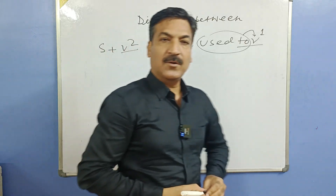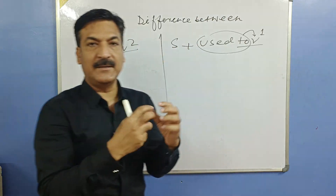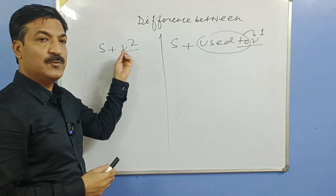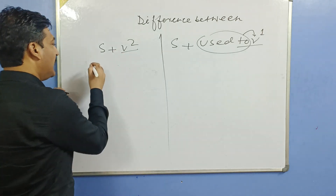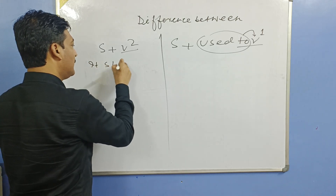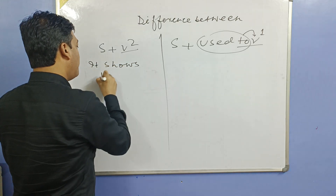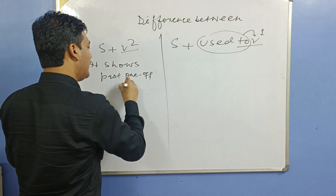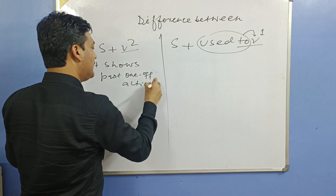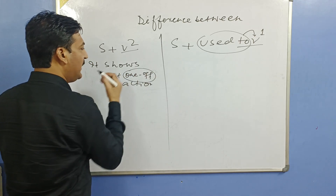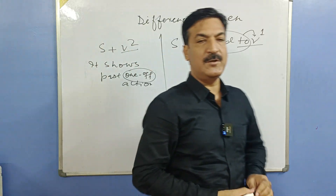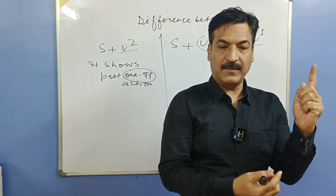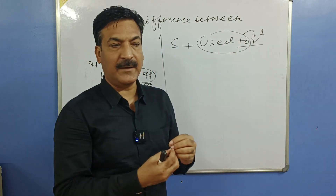Let's unfold the secret behind these two structures. Jab kabhi bhi aap verb ke doosre form ka istemal karo, yaad rakho — it shows a 'one-off action'. Wo action, wo kaam jo past mein sirf ek baar hua ho, uske liye hum V2 ka use karte hain. Jaise: mein wahan gaya tha — kitni baar? Ek baar. Meinne tumhe phone kiya tha — kitni baar? Ek baar.